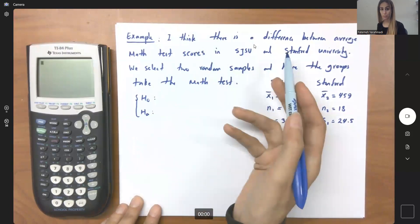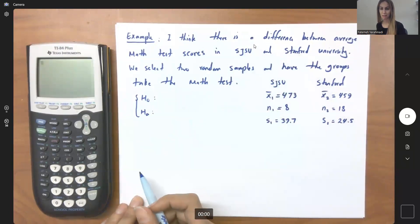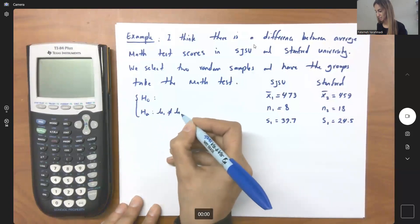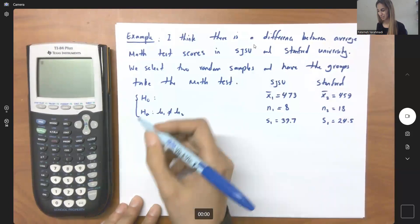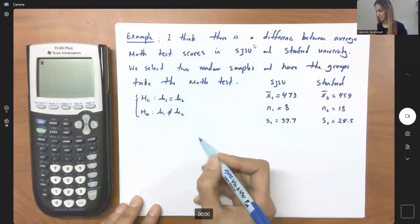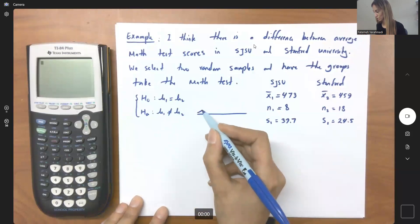Well, this is what I'm thinking. This is my claim. There is a difference. It means that they are not equal to each other. So the claim is mu one is not the same as mu two. Its opposite, its complement, they are the same thing.